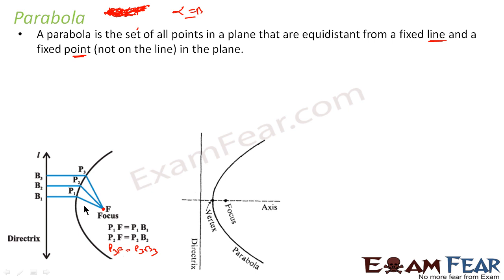Similarly, you can draw more points. Let's suppose P0 — this line length and this point length should be equal. For each of these points the distance to the line and the distance to the fixed point are the same.